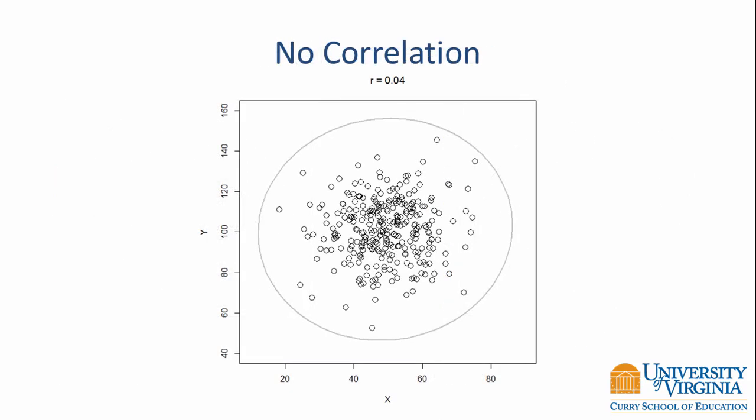Finally, we have a picture of no correlation where r equals 0.04. If you draw an ellipse around all of the points, it doesn't look like an ellipse at all — it looks more like a circle — telling us there is really no relationship here. The points appear to be randomly scattered in the plot.